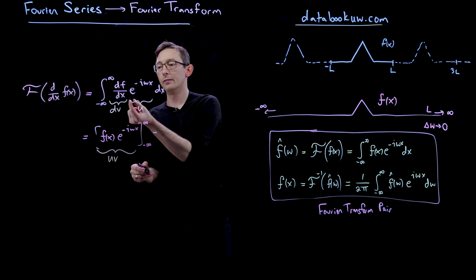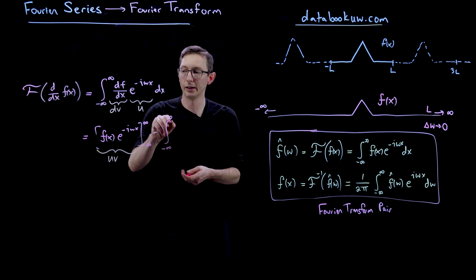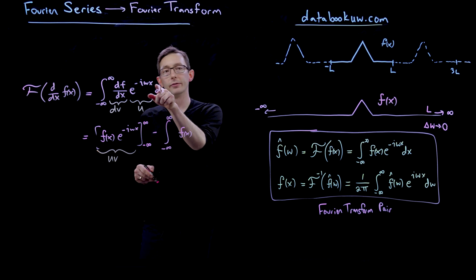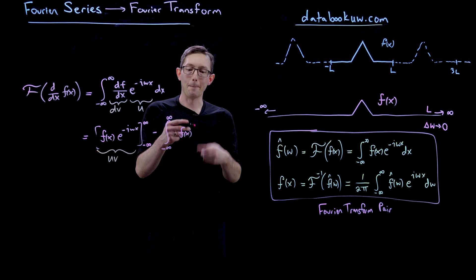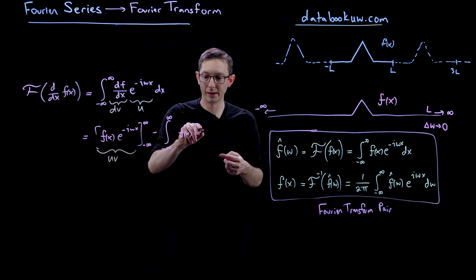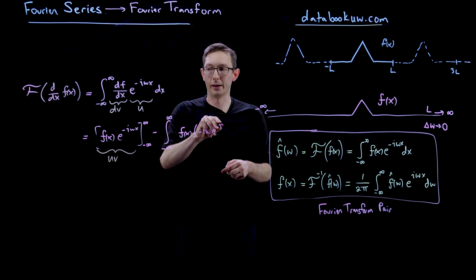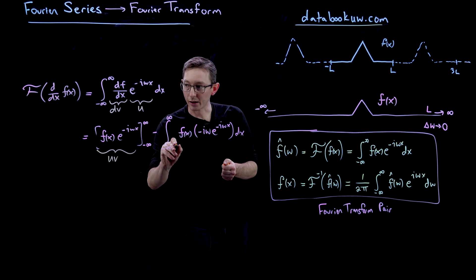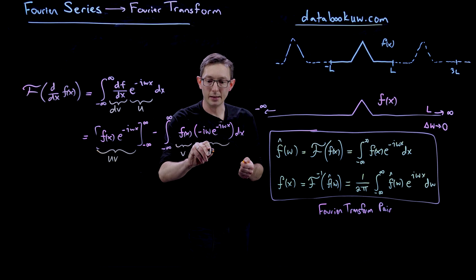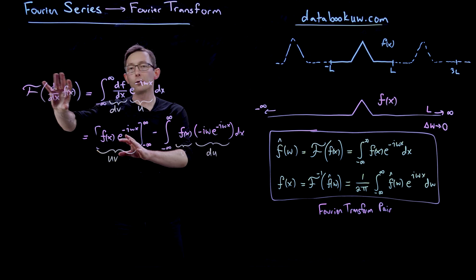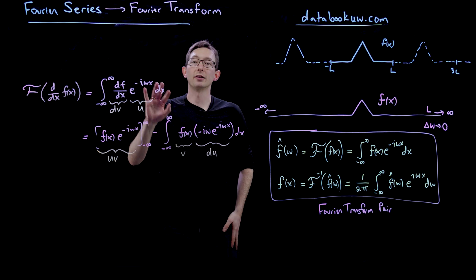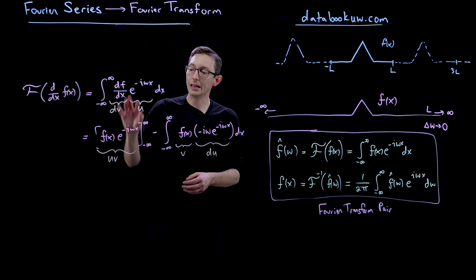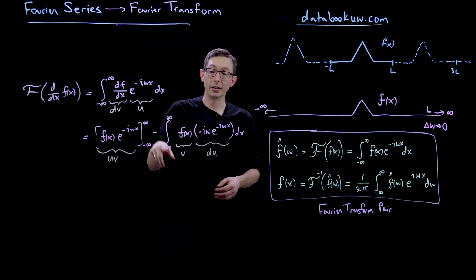Then minus the integral of v du, from minus infinity to infinity. v is just f of x. And du — if you take the derivative of u, which is e to the minus i omega x, with respect to x — you get minus i omega e to the minus i omega x. So we have v and du identified. All we've done is take the Fourier transform of the derivative of f and apply integration by parts, letting d f dx be dv and e to the minus i omega x be u.